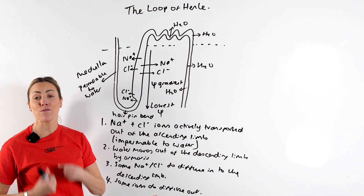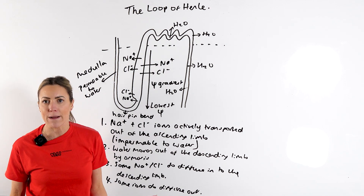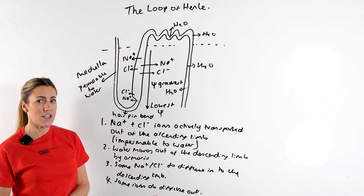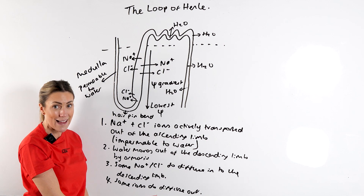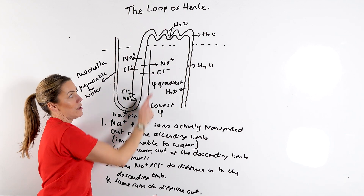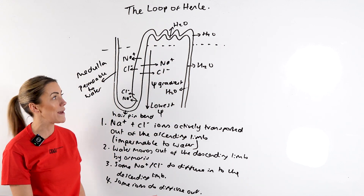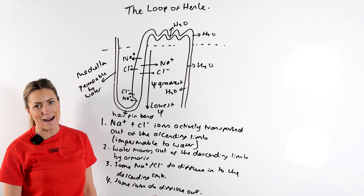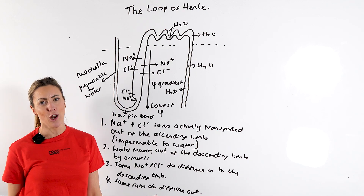All of this is helping us to produce concentrated urine — making sure that we don't lose too much water in our urine and that we reabsorb the water we require. You might see questions about desert mammals. What you need to know is that the longer the loop of Henle — and desert mammals do have longer loops of Henle — the more sodium and chloride ions will be actively transported out, lowering the water potential in the medulla even further. So even more water will diffuse out of the filtrate by osmosis, helping those desert animals to reabsorb more water.